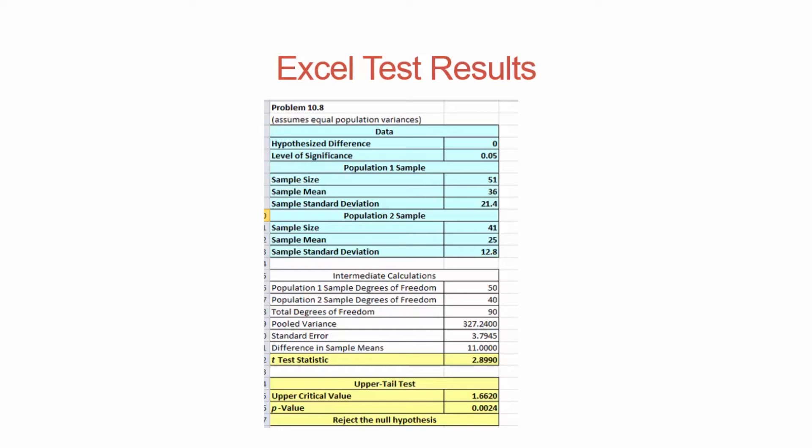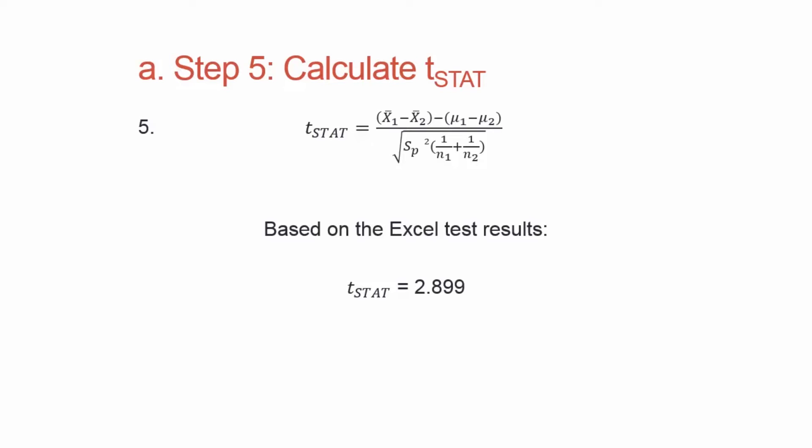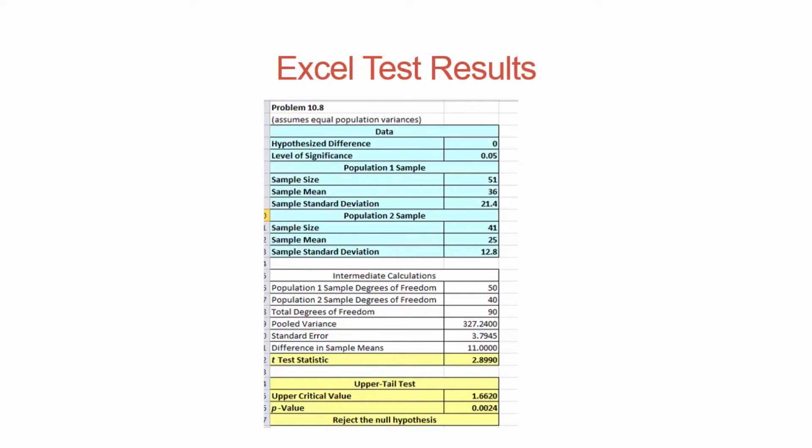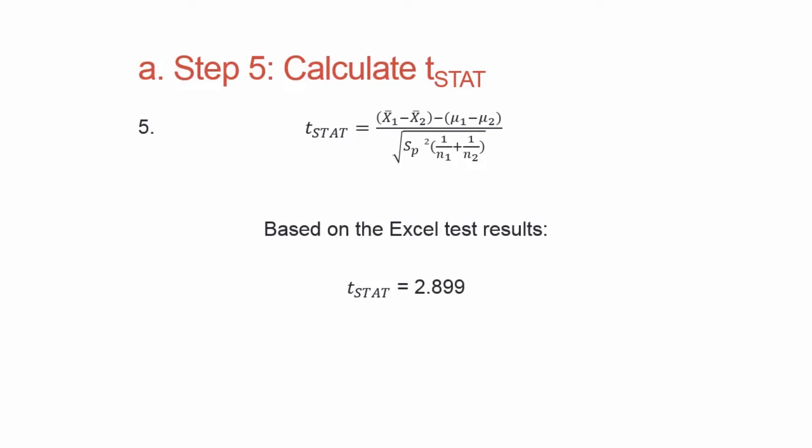Step five: here's the number I'm looking for — 2.8990. That's my t-test statistic. The formula is: t-stat equals x-bar 1 minus x-bar 2, minus mu1 minus mu2 — and since mu1 minus mu2 is assumed equal to 0 I can drop that part — all over the square root of s-squared-p, which is the pooled variance, times 1 over n1 plus 1 over n2. Looking at the Excel result, 2.8990 is the number. That's all I need for step five — Excel has done the calculation for me.